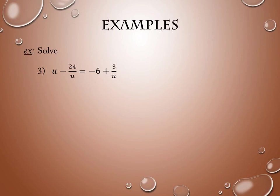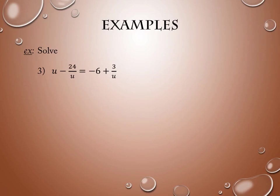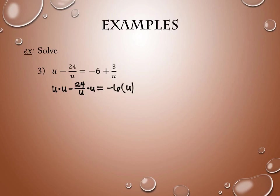Let's try another one. This one's a little cleaner to work with, but the result in the end makes it harder to get the answer. As you look at this one, you don't have to factor any denominators — it's already nice and neat. The only denominator is U. So I'm going to multiply every term by U: 24 over U times U, negative 6 times U, and 3 over U times U.